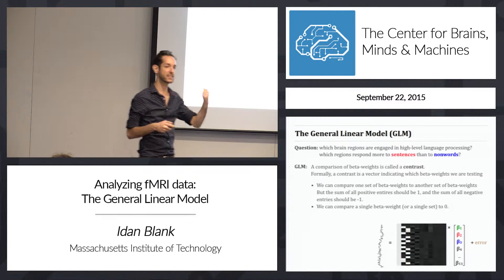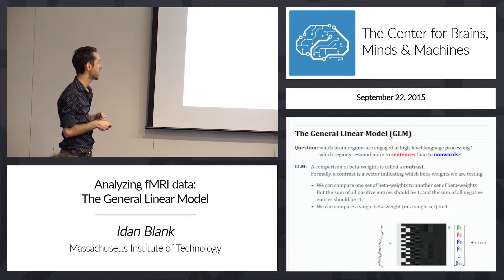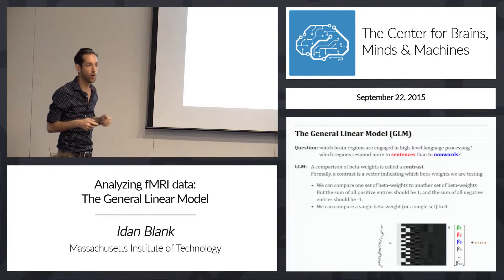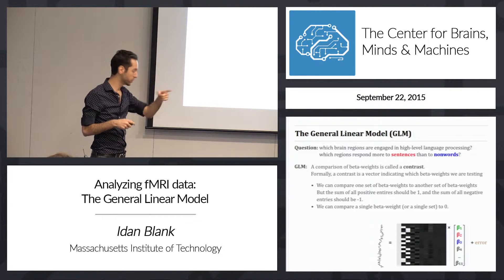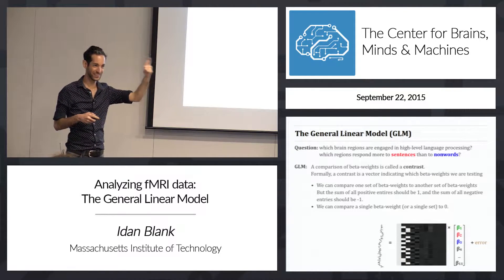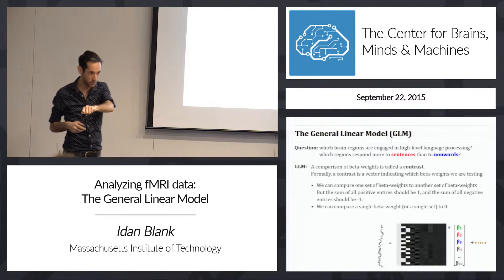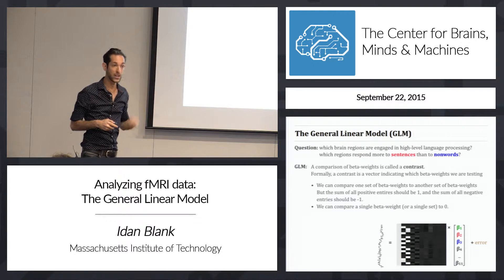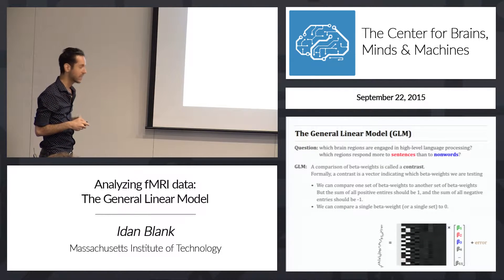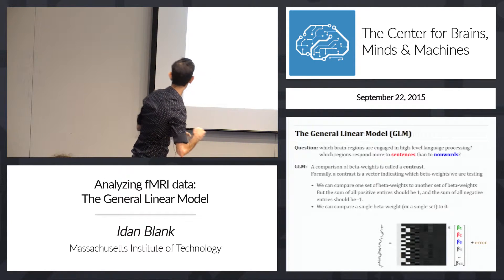You can compare one set of beta weights to another set of beta weights. For example, you can ask whether the three betas for head rotation are bigger than the three betas for head translation. Or if you ran the same experiment twice, you'd have a beta for sentences in the first experiment and a beta for sentences in the second experiment, and similarly for non-words. You can test whether the two betas for sentences are bigger than the two betas for non-words. The rule is: the sum of all positive entries should be 1, and the sum of all negative entries should be minus 1.